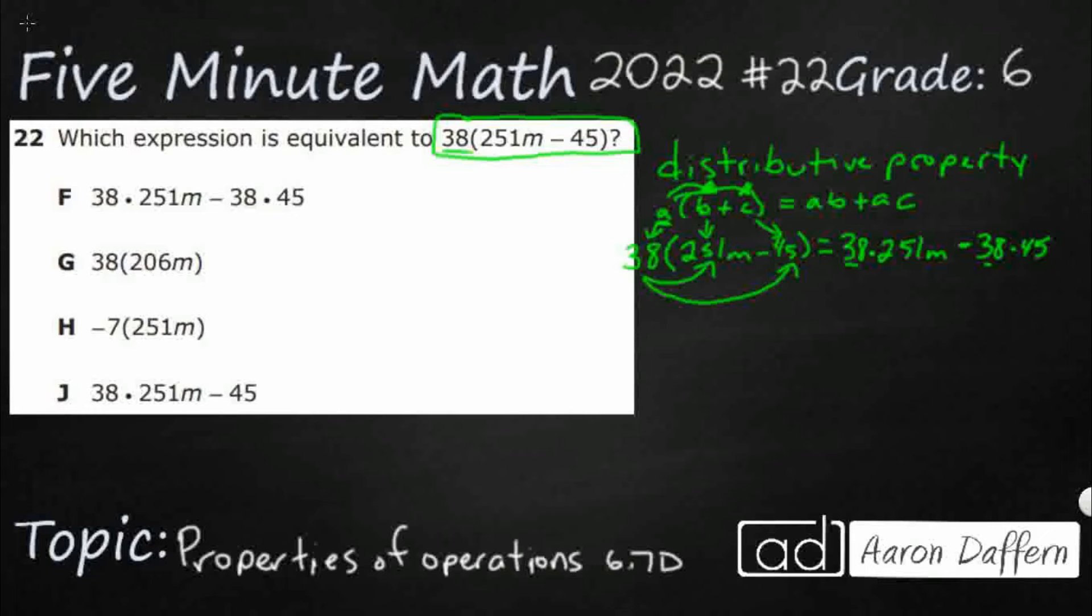Since we don't know what M is, let's substitute it. Let's make it super simple. Let's make M zero. Okay. So, if M equals zero, guess what I'm going to get here? I'm going to get 38 times parentheses 251 times zero minus 45. So, that's going to cancel out. That's a zero. So, it's just going to be 38 times negative 45, right?